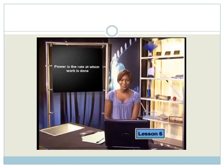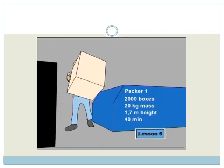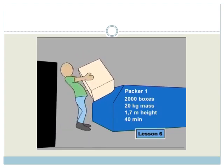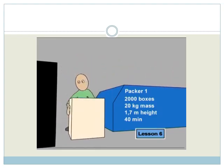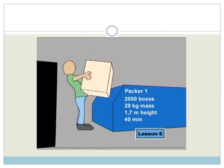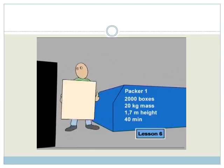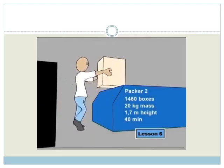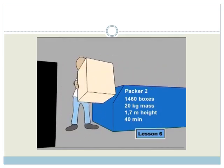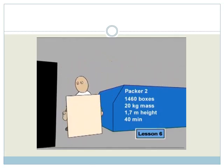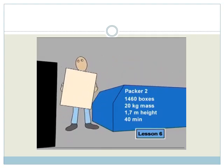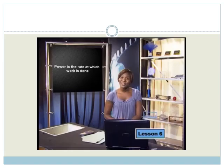Here is another example. A supermarket packer places 2,000 boxes, which each have a mass of 20 kilograms on a 1.7 meter high shelf. He does this in the last 40 minutes of his shift. During the same period, another packer places 1,460 of these 20 kilogram boxes on the same height shelf. Who do you think is more powerful? I hope that you said that the first packer is more powerful.